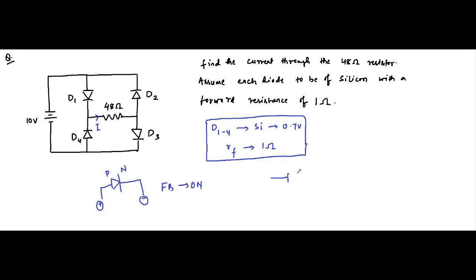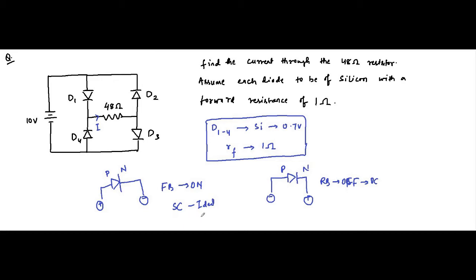When it is opposite — that is, P end connected to negative and N end connected to positive — it is reverse biased, it is off, open circuited. Depending on what kind of diode model is used, the diode can be short circuited if it is ideal, or replaced with just the built-in potential if no forward resistance is mentioned, or represented with its built-in potential plus the forward resistance.